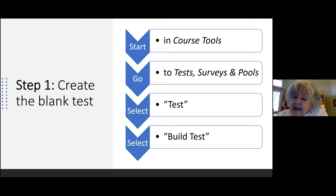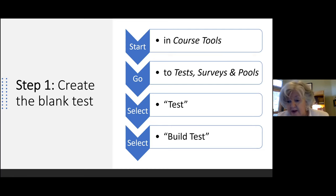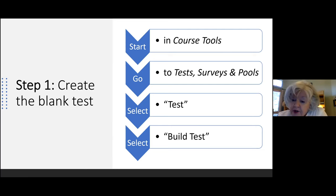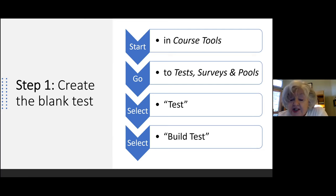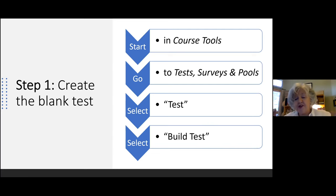So step one, you're going to create the blank test. You start in Course Tools. If you think about your Blackboard site, that black navigation panel over on the side — there's that workhorse called Course Tools. When you click it, it opens up and gives you about at least a dozen different utilities. So you go to Course Tools, and then inside that there is Test Surveys and Pools. You'll click there. Once you're there, the things you'll select are Test and Build Tests. It asks you whether you want a test, survey, or pool, and you say you want a test. So what you've done is just created this little blank test.